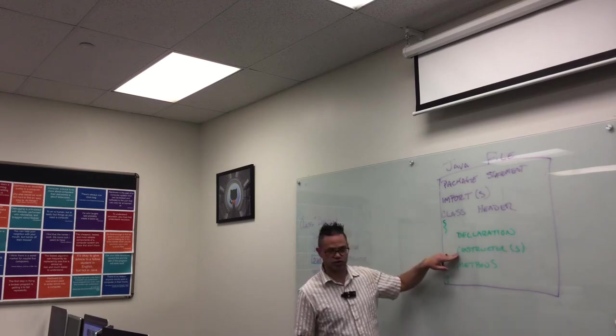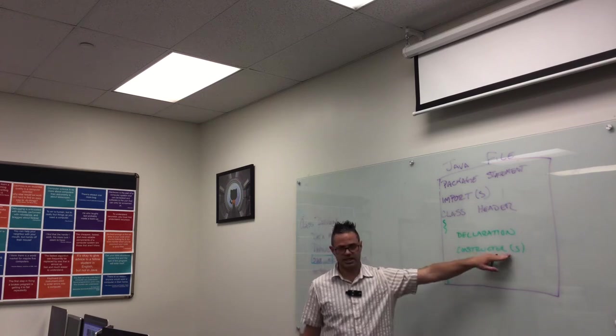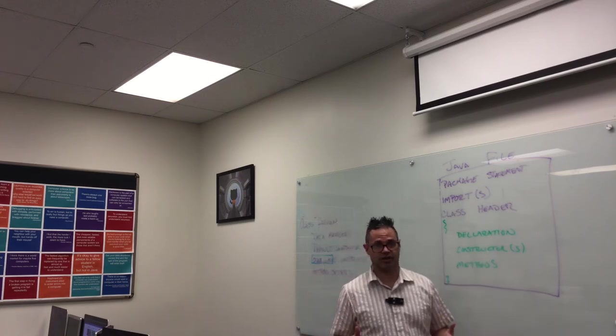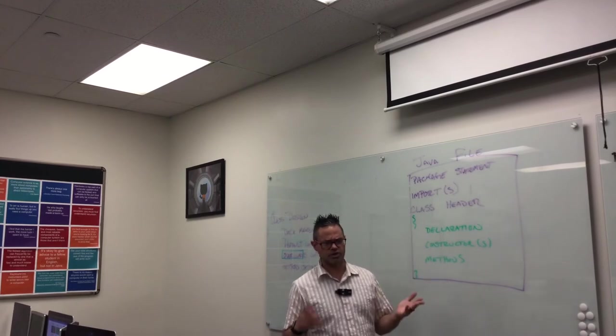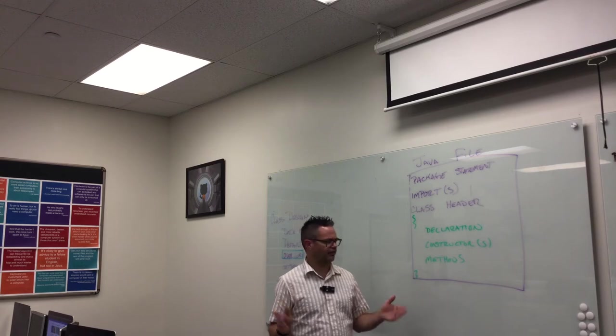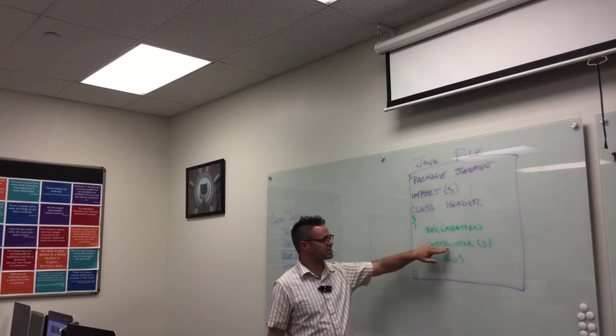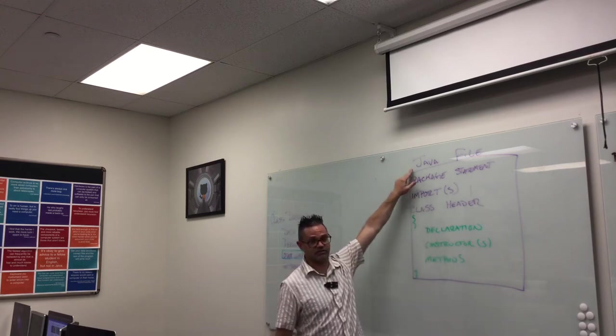The next section we have is our constructor section. Again, we have the parens S on that, because when we're talking about constructors, we can have anywhere from zero to one, two, three, four, five, eighteen constructors. Usually we'll see around zero to two. One or two is where we most often have that happen. And the constructors, of course, have the same name as the class and same thing as the file.